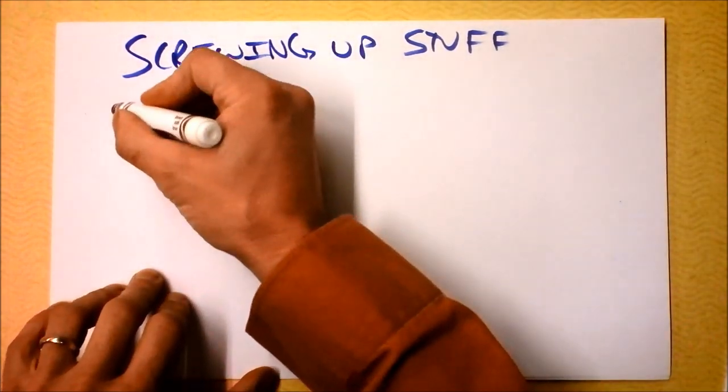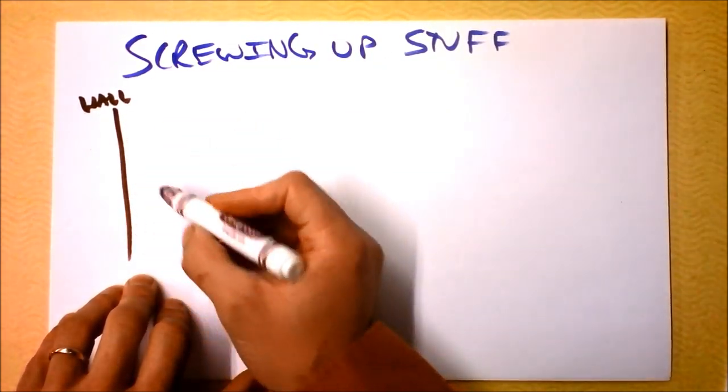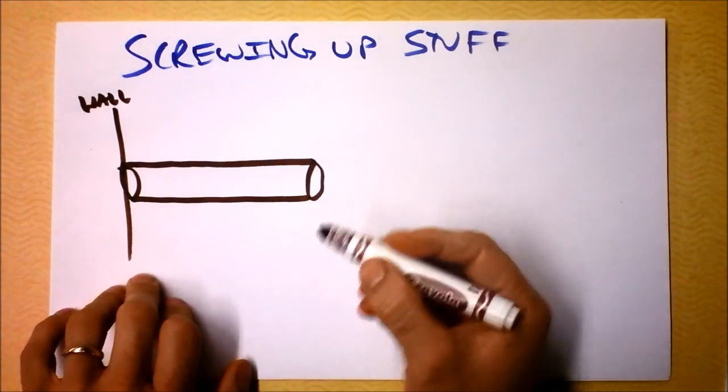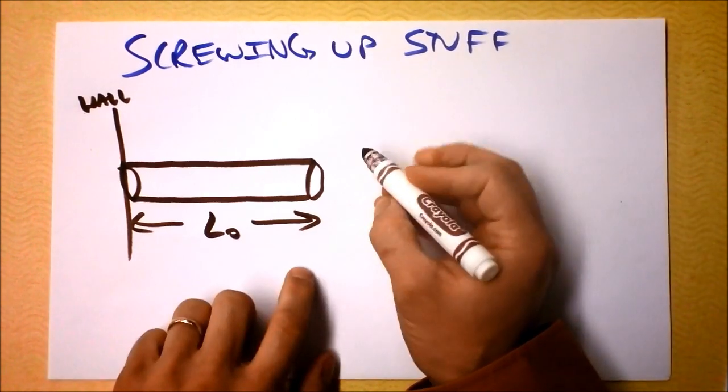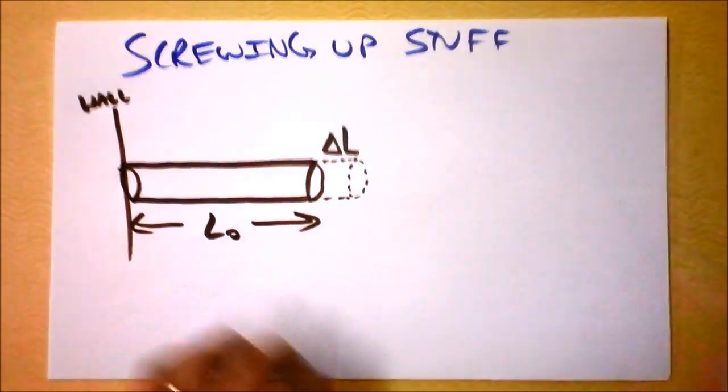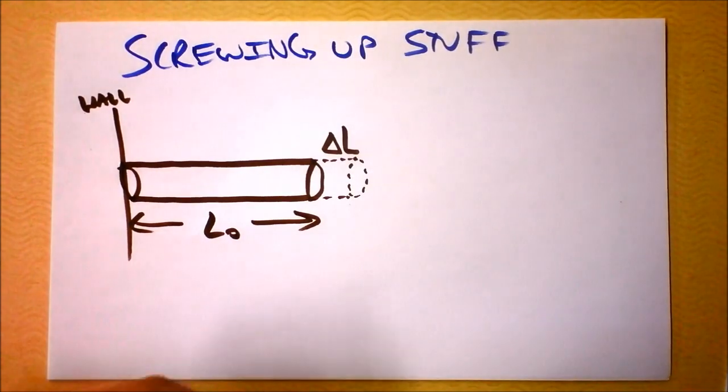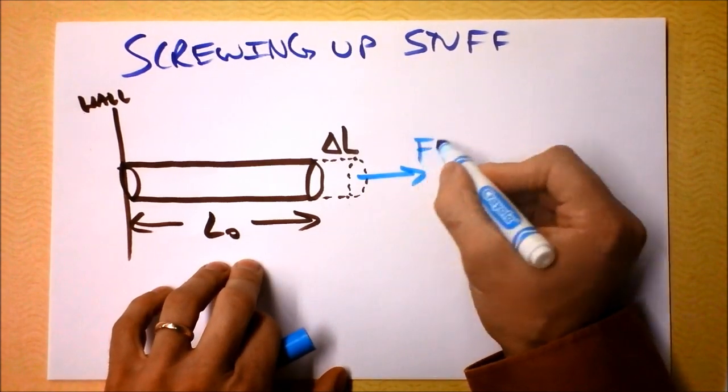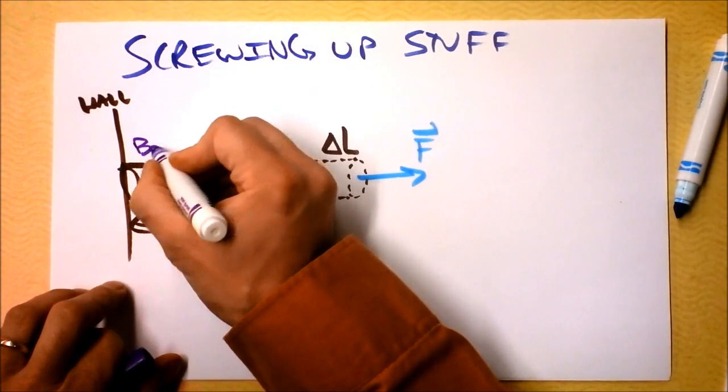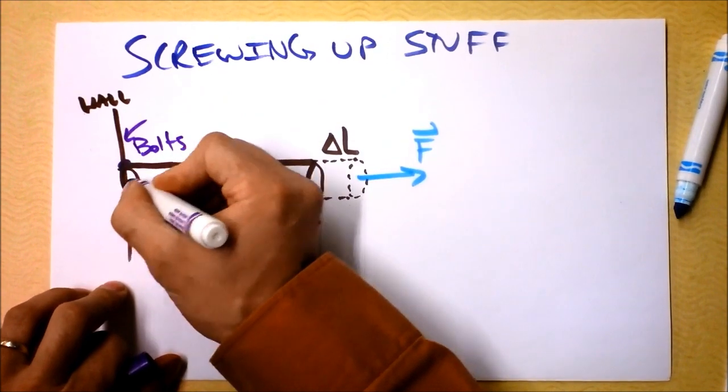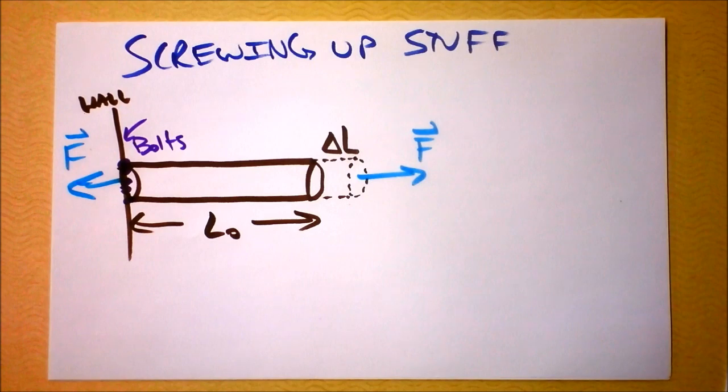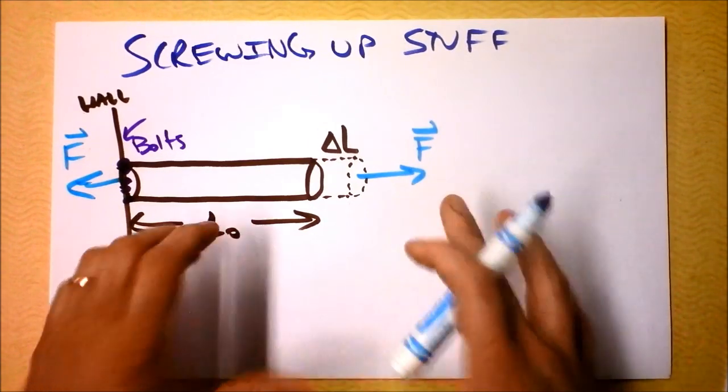Here we go to our first bit of screwing up stuff. Here's a wall, and I want to bolt a cylinder to it. Here's my cylinder of stuff that I'm planning to screw up, and I want to apply a force to this stuff. It's starting out with an initial length of L-naught. And I want to apply a force to it, and that's going to cause it to lengthen. That change in length is what I'm going to be presumably measuring, and that happens when I apply a force here.